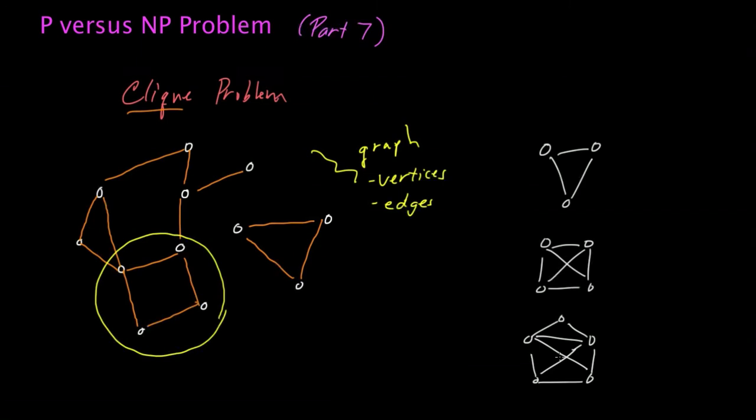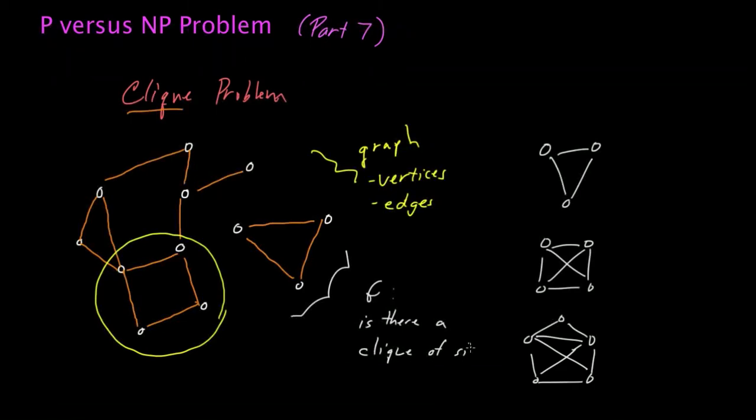And again, the clique problem asks, for a given graph G, so imagine we call this graph G, the question is, is there a clique of size K? For some integer K, so in other words, is there a four-clique or a five-clique or a six-clique? And the input to the clique problem is the graph G, together with a parameter K, and then the output is yes or no if there is a clique of that size.